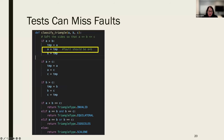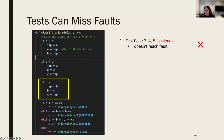Tests can miss faults. Here's a Python program that classifies a triangle — it takes in three inputs A, B, and C, sorts the sides, and returns whether the triangle is invalid, equilateral, isosceles, or scalene. There's a seeded fault: in the first if statement doing a sort, 'A equals temp' is incorrect — it should be 'A equals B.' Running test case (3, 4, 5) expecting scalene: the condition A > B is never true, so we never even reach the fault. This test case may find other faults, but not this one.